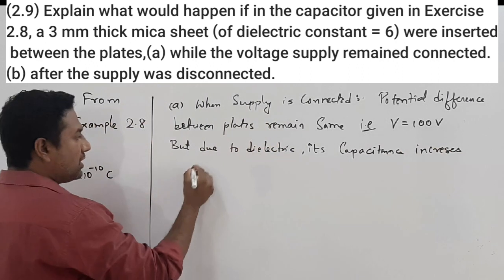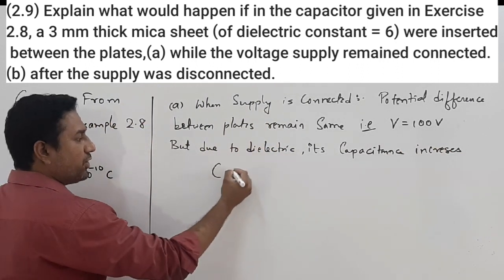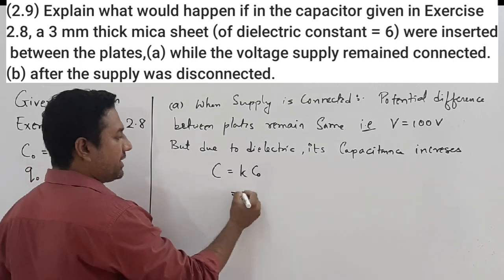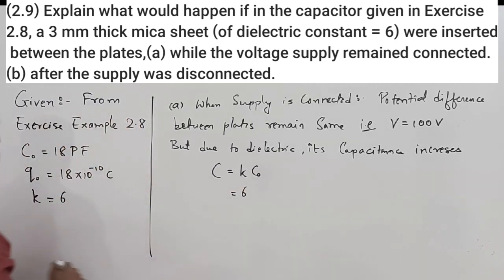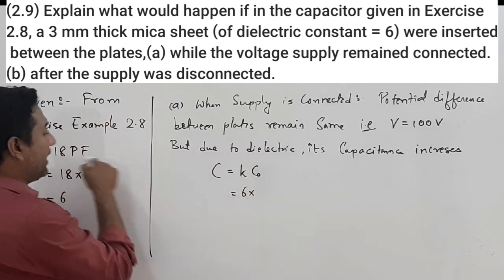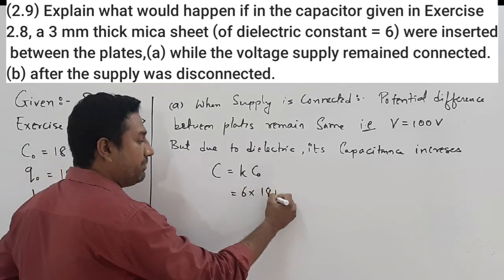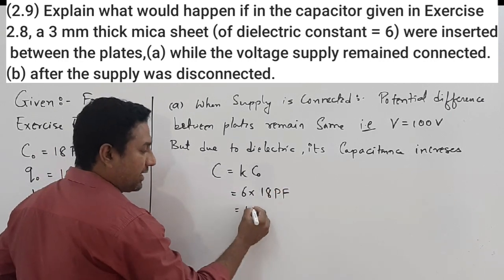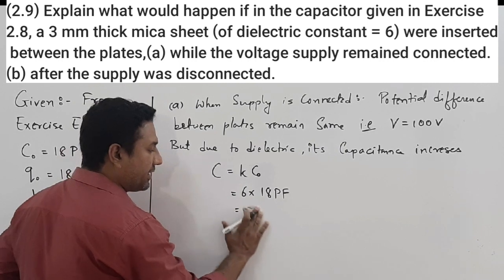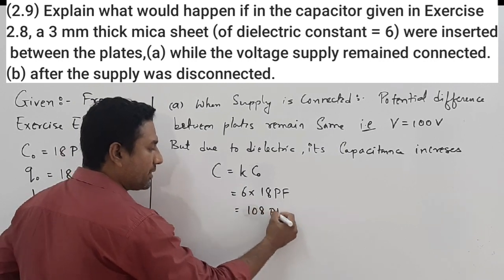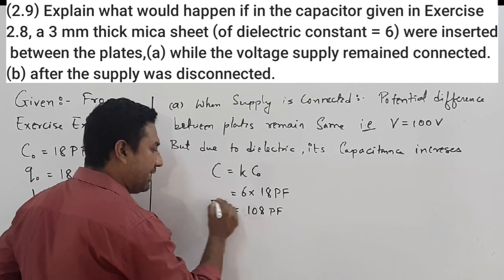The new capacitance will be C = k × C₀. Here k is 6 and the initial capacitance C₀ is 18 picofarad. So the new capacitance is 6 × 18 = 108 picofarad.